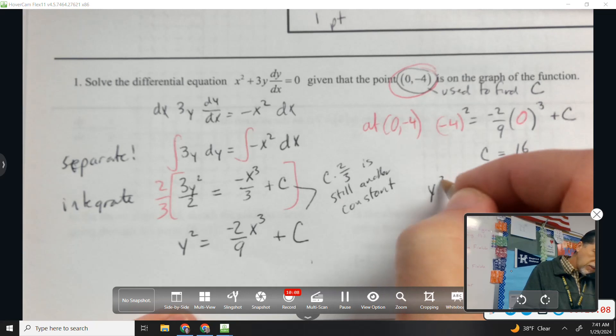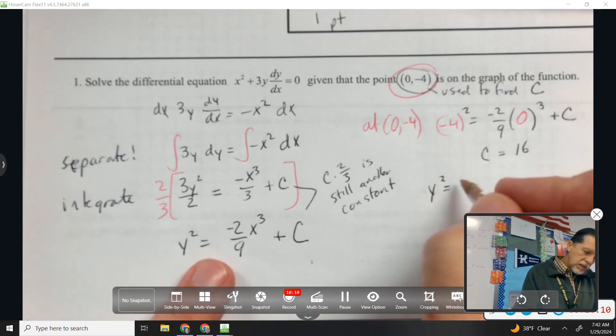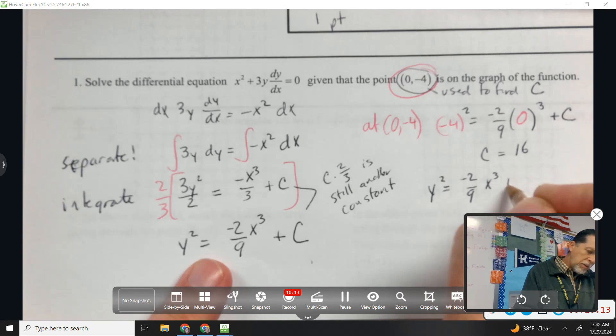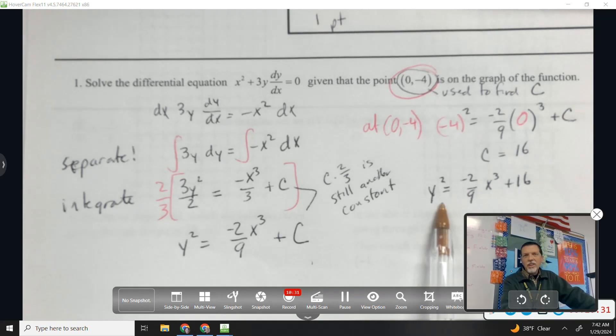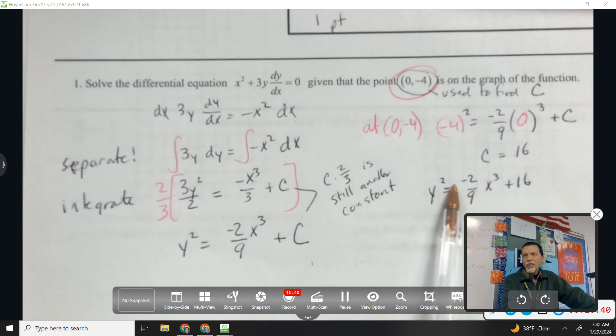So C equals 16. So y squared equals negative 2/9 x cubed plus 16. The trouble is we're not quite done yet, because the solution to a differential equation is supposed to be a function. That's not a function. Y squared means it's going to have some kind of symmetry and it's not going to pass the vertical line test. We need to solve for y.